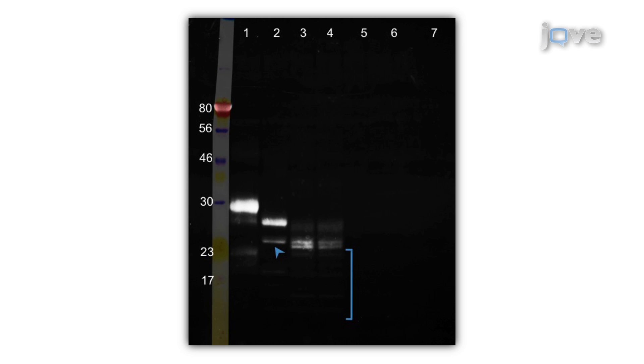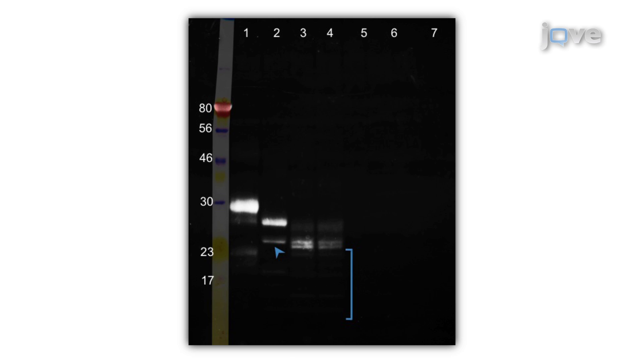These data support the conclusion that recombinant HCG-beta expressed in mouse cells contains multiple glycoforms due to the inherent heterogeneity of glycosylation.